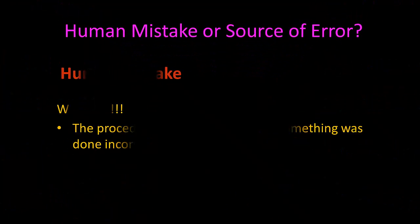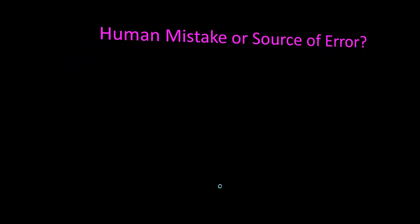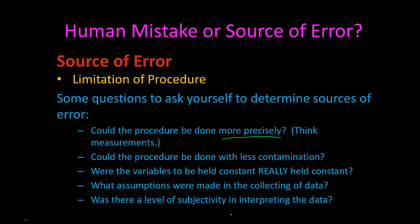Human mistakes are sources of error — a human mistake is a 'whoops' because the procedure was not followed or something was done incorrectly. For instance, if you were supposed to measure five grams but measured six grams. A source of error, on the other hand, is a limitation of the procedure. Could the procedure be done more precisely? For example, did you use a beaker when it would have been more precise to use a graduated cylinder? That could be a source of error.